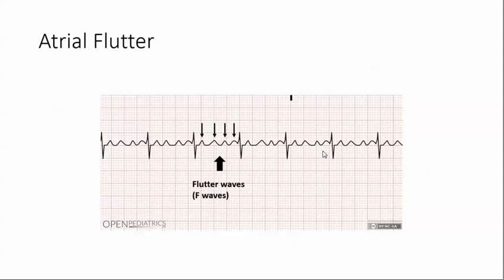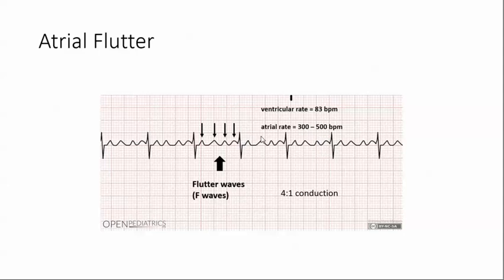The ventricular rate may be slow, normal, or fast. In this strip, we're in a 4 to 1 conduction. The ventricular rate is 83 beats per minute. Keep in mind this is not a 6-second strip, and the atrial rate in this one is between 300 and 500 beats per minute. So the atrial and ventricular rates are different, with the atrial rate being much faster.